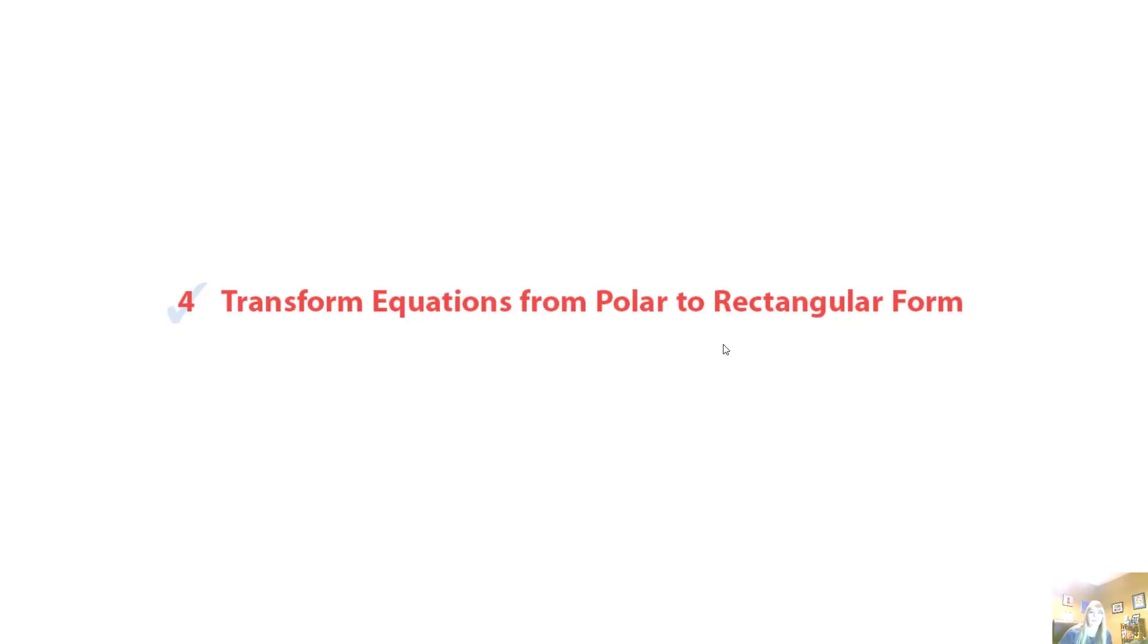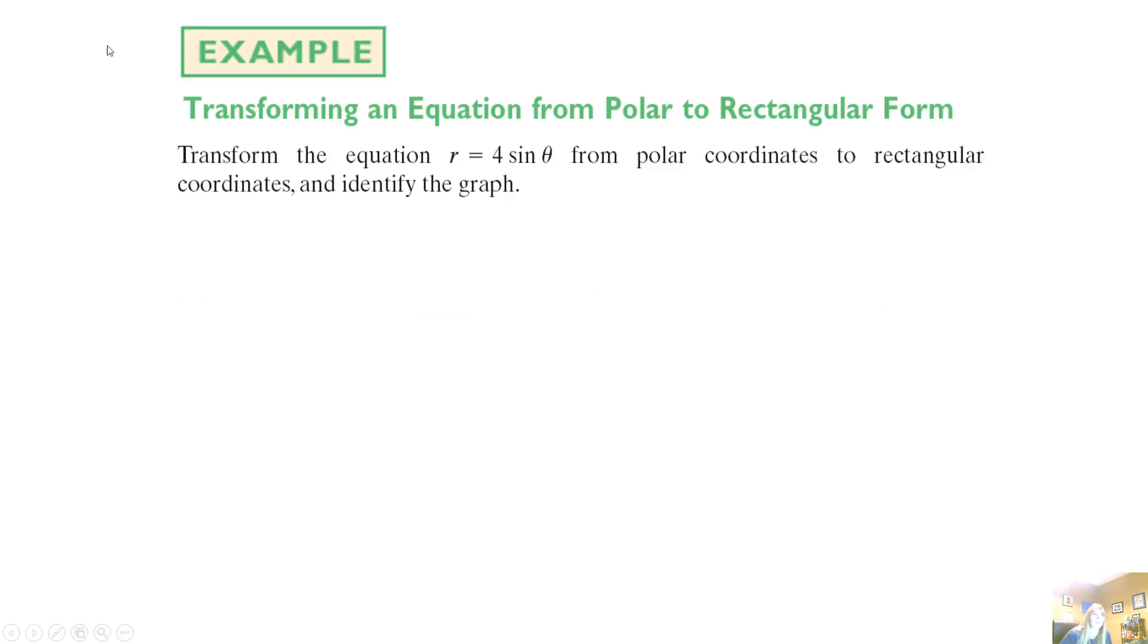Let's finish up this whole lesson on polar coordinates. So now we're going to look at actually transforming equations from polar to rectangular form. So it says transform the equation r equals 4 sine theta. So certainly I can see that this is a polar equation because I have theta from polar coordinates to rectangular coordinates, and then identify the graph.